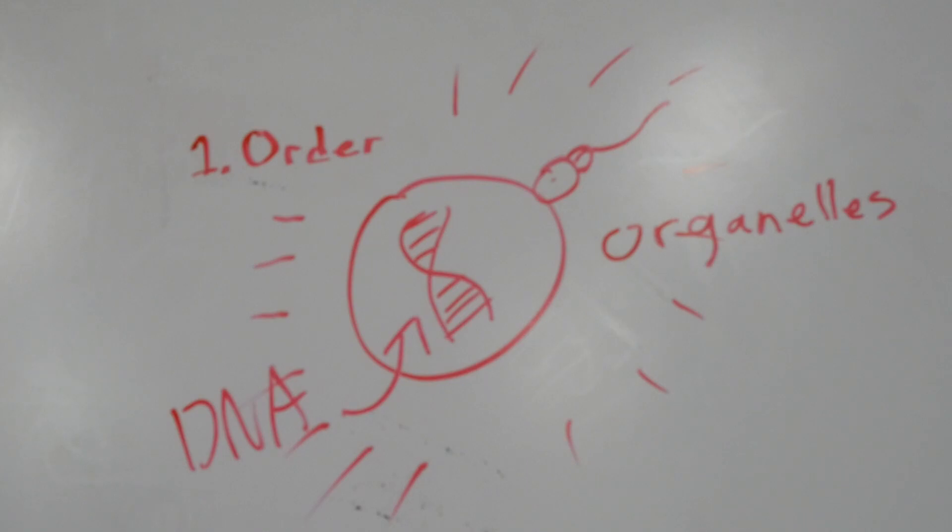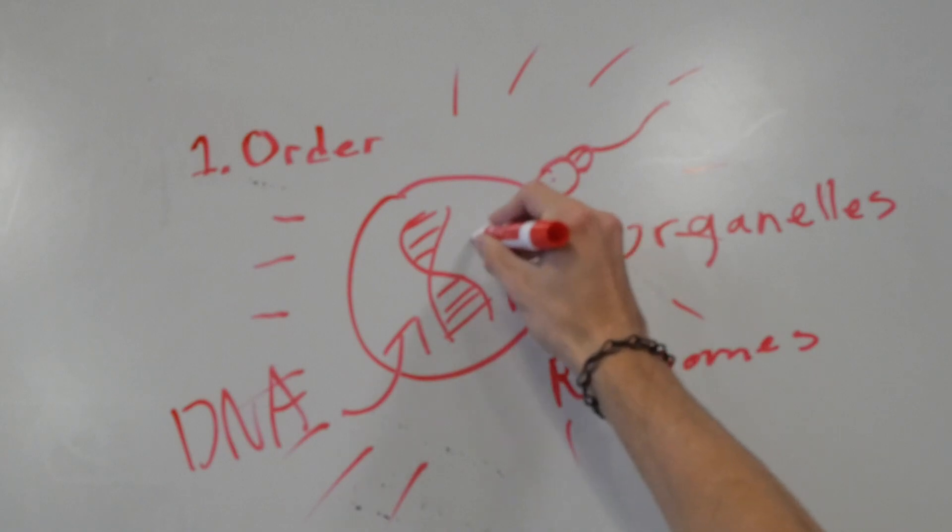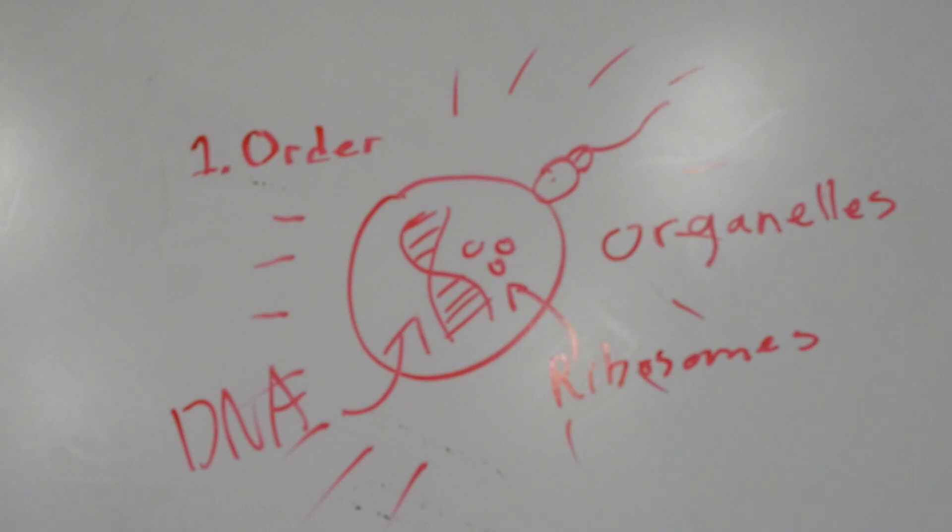Certain molecules come, copy this code, and send it off to the ribosomes. These ribosomes use the code to construct proteins. Now, this is only the messily summarized version of the process. To explain it in full would likely require several college courses.